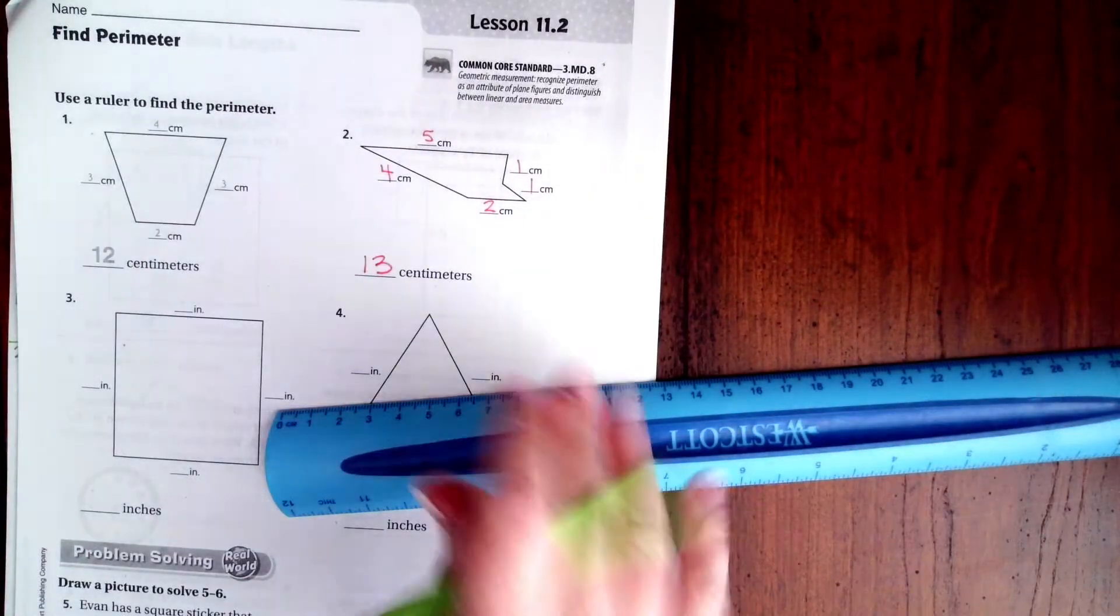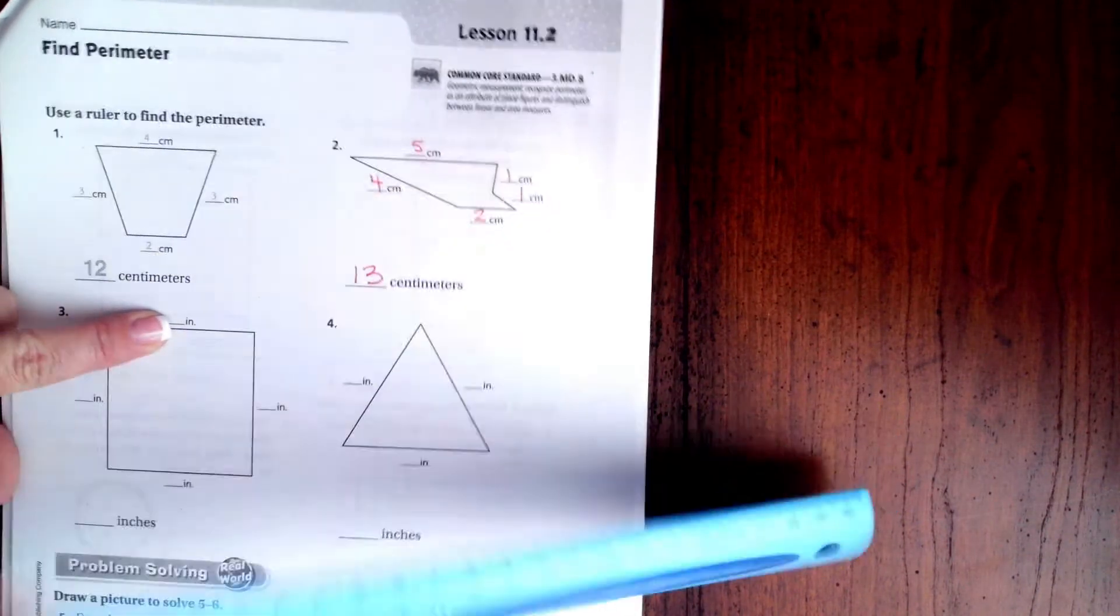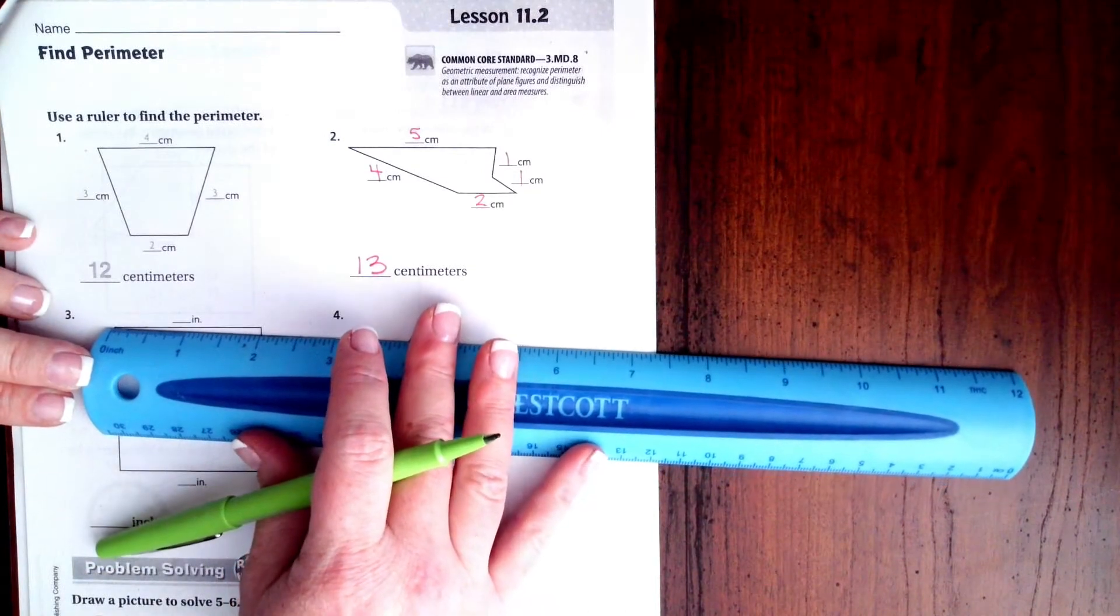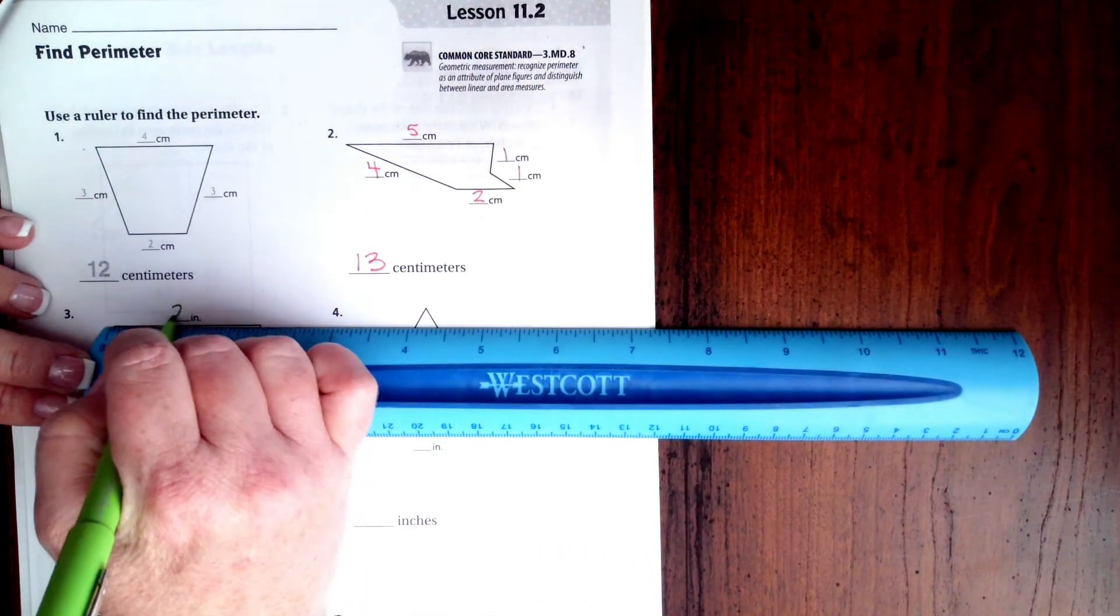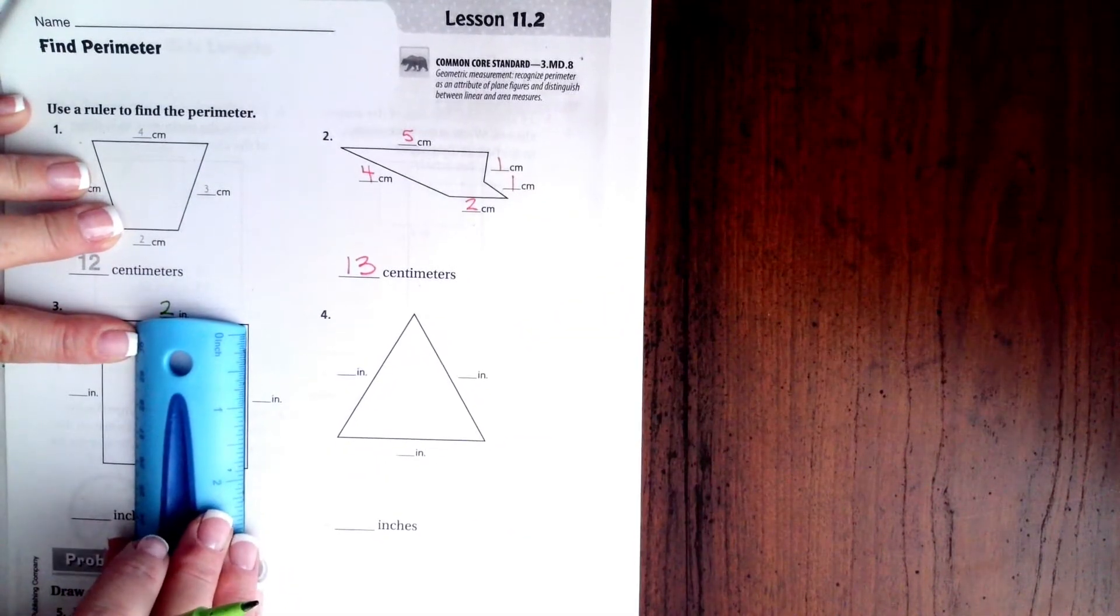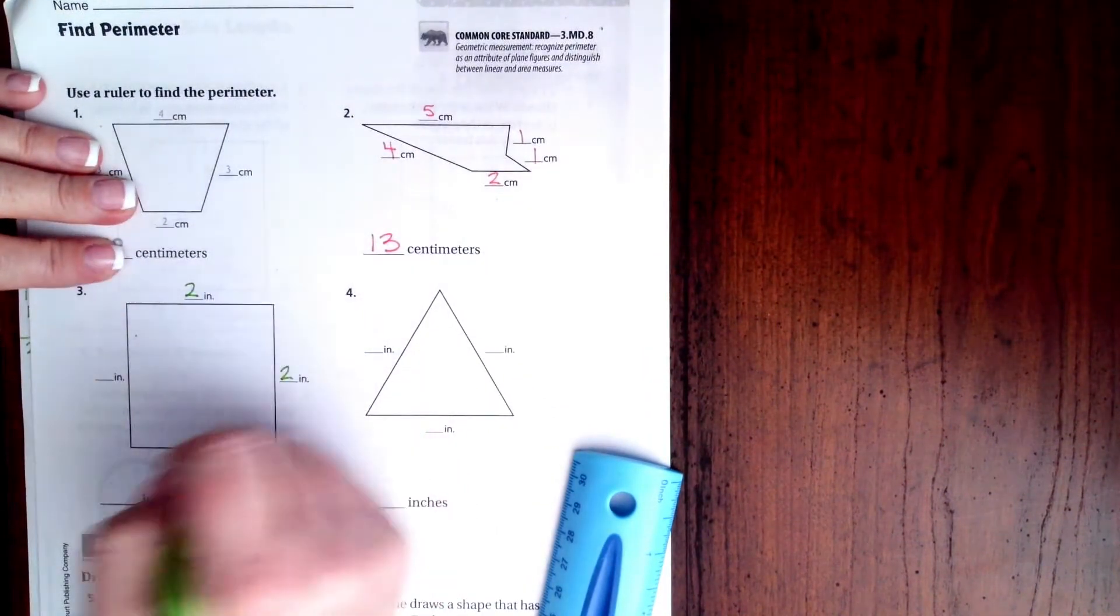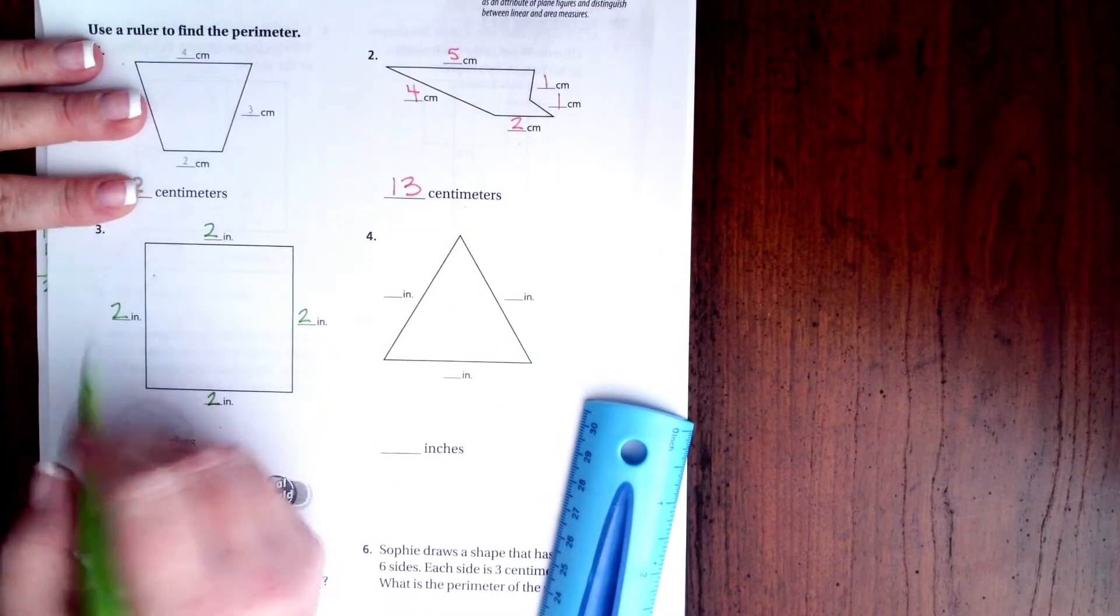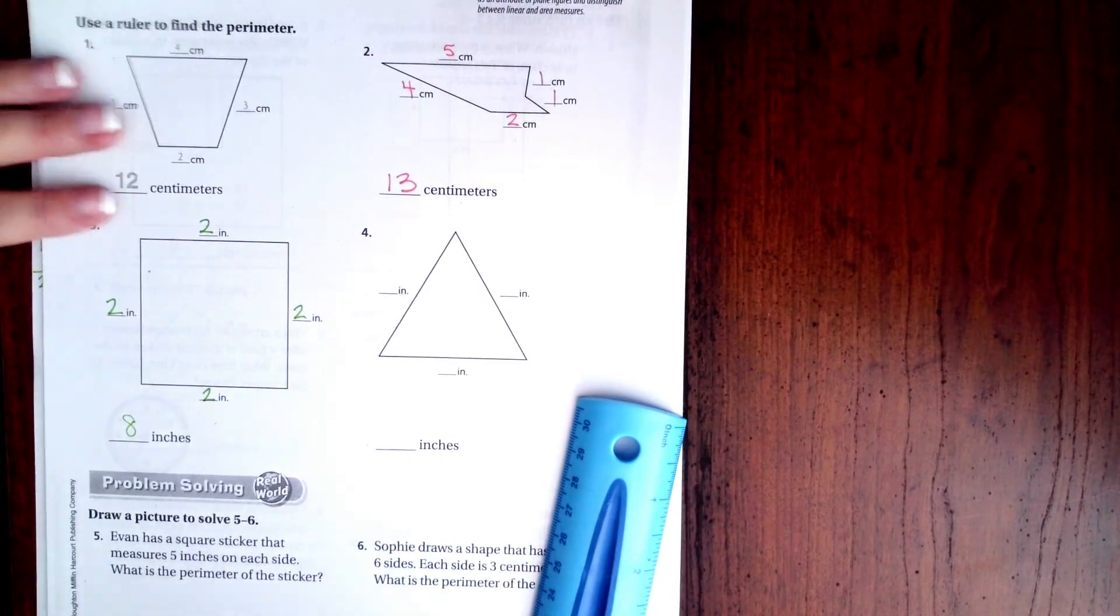We're going to go ahead and do the next one. Now it's being measured in inches, so we need to pay attention to what unit we're being measured in. So now we're going to start where the lines are, and two inches. Now if you'll notice, that's a square, that means that every side is two inches. So I'm going to put two, two, and two. So two, four, six, and eight. Done!